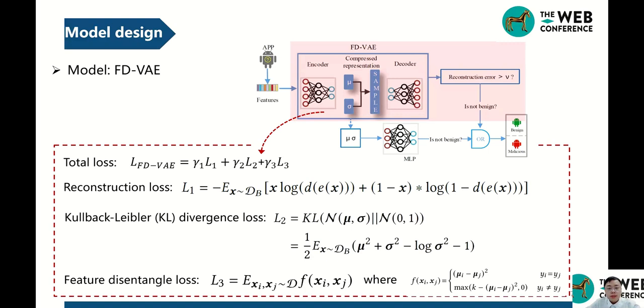As shown in this slide, FDVAE has three losses. Similar to VAE, the reconstruction loss and the KL-divergence loss are employed. What's more, we design a feature disentangle loss to lead the encoder to disentangle the features of benign and malicious examples.